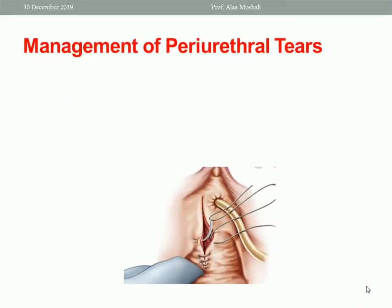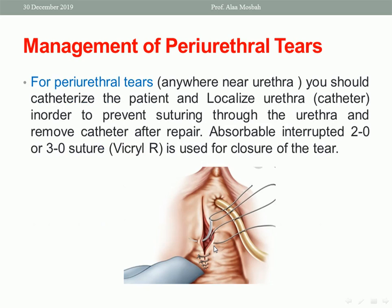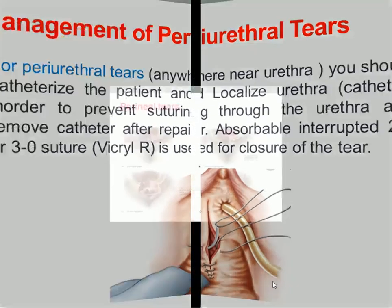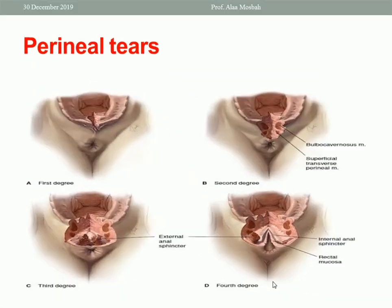For periurethral tears, as shown in the picture, you should catheterize the patient and localize the urethra in order to prevent suturing through the urethra, and remove the catheter after repair. This confirms there is no injury to the urethra. Absorbable interrupted 2-0 or 3-0 Vicryl suture is used for closure of the tear.